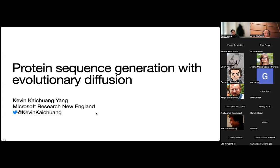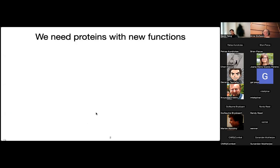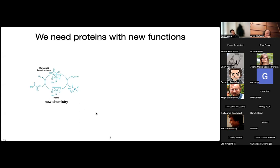Today we're going to talk about protein sequence generation with evolutionary diffusion. The general motivation here is that we want to come up with new proteins that do new functions. Some examples of what people have done in the past — when people want to expand the scope of functional space occupied by proteins, when people have done new chemistry. For example, the Arnold lab used engineered cytochrome C, which I don't think naturally is an enzyme, to catalyze the formation of carbon-silicon bonds, which don't occur in natural biology, but were known in organic chemistry.